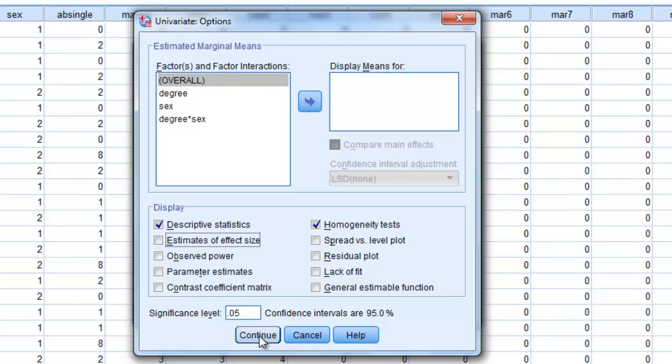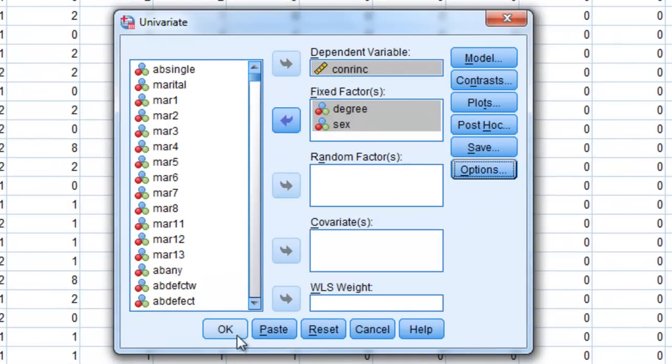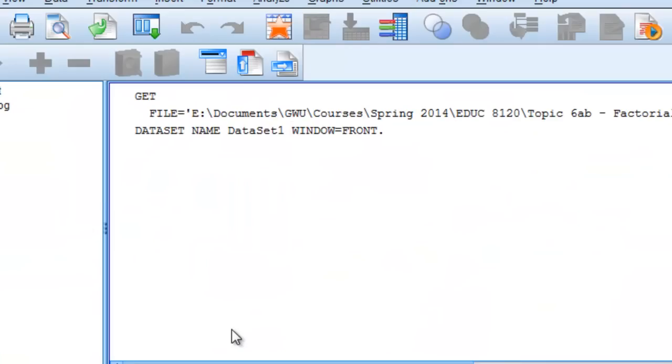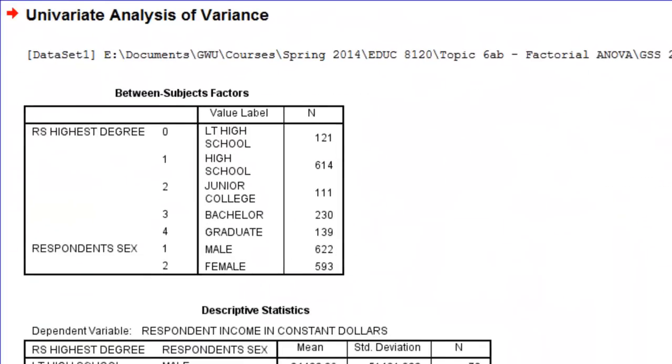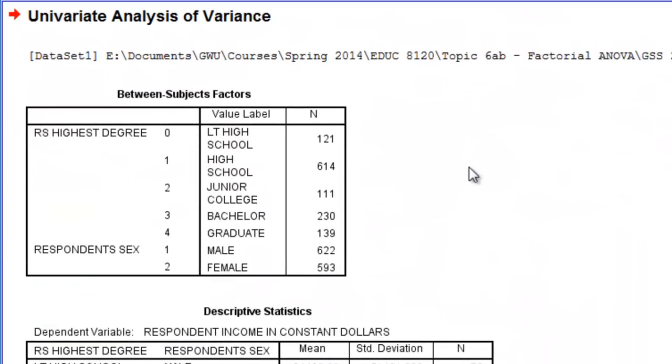Click on Continue. And then click OK. And this is what our output looks like. So very quickly I will go through this. My first table of output, this just contains my sample sizes for each of my groups.